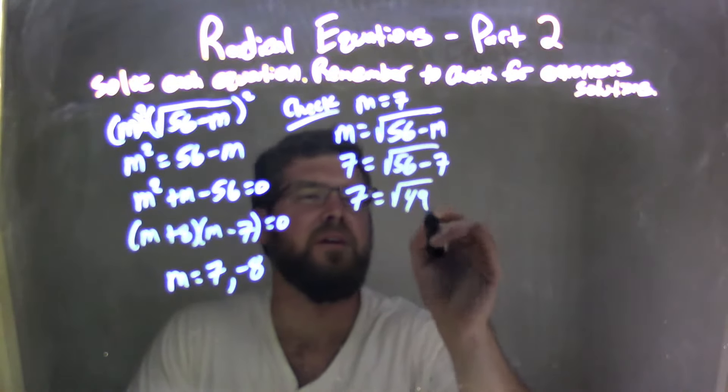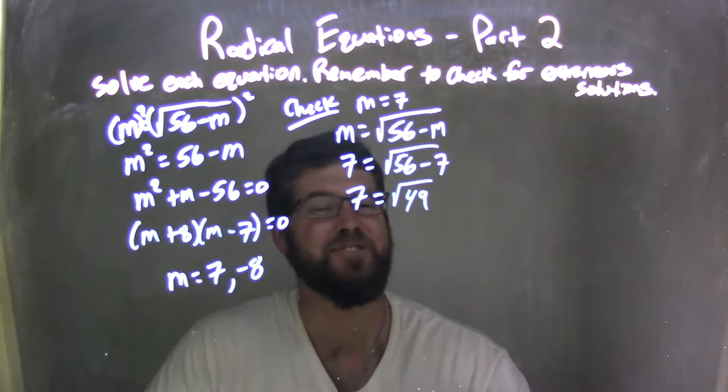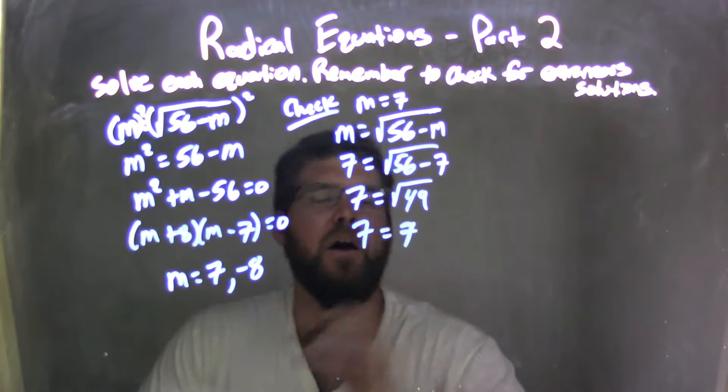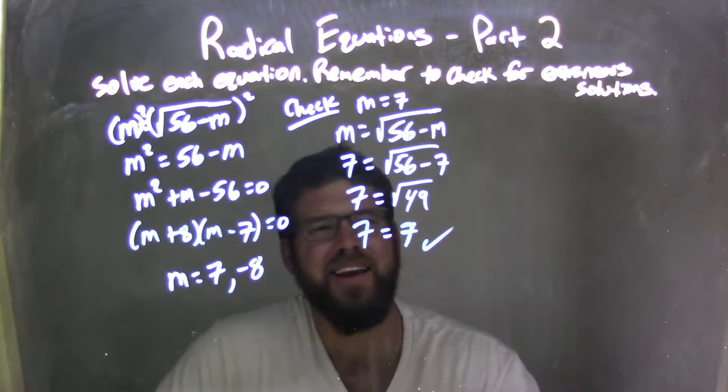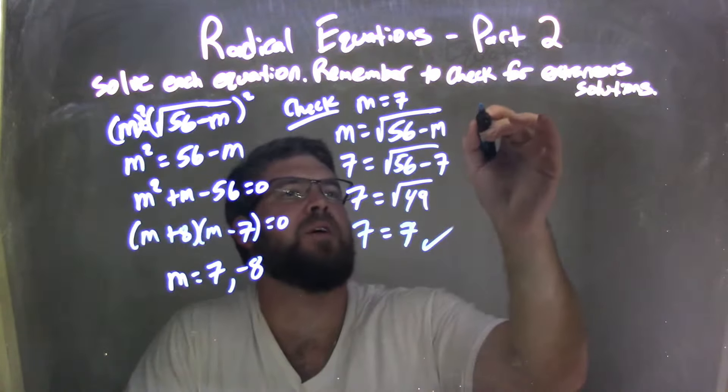That's 49, folks. Square root of 49 is just 7. Oh yes! Left and right-hand side are equal. Fantastic. 7 is a true answer, not extraneous. So we have two answers here. We got to check both of those bad boys.